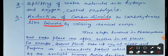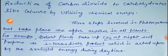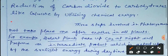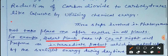These three steps involved in photosynthesis do not take place one after another in all plants. For example, desert plants during night take up carbon dioxide and prepare an intermediate product, which is acted upon by sunlight during the daytime. So there is a delay in the photosynthesis process in desert plants.